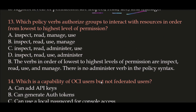Question 13: Which policy verbs authorize groups to interact with resources in order from lowest to highest level of permission? The verbs in order from lowest to highest level of permission are: Inspect, then Read, then Use, and then Manage. Note there is no 'Administer' verb in the policy syntax.